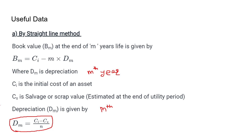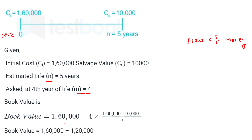Putting the values into the straight line method formula: BV_4 = 160,000 − 4 × (160,000 − 10,000) / 5. This gives the depreciation over four years, and our book value at the fourth year comes out to be 40,000 rupees.